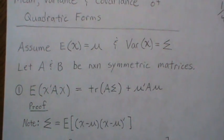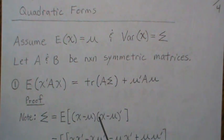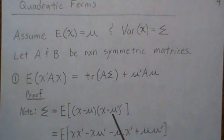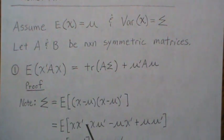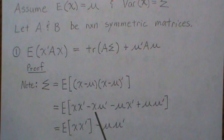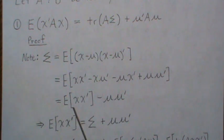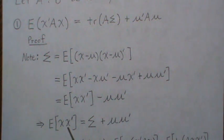For the proof we give a note first. The variance-covariance matrix is the expected value of this vector product. If we multiply through and take the expectation, the mu minus mu prime and mu mu prime terms partially cancel, leaving us with sigma. Rearranging gives us the expected value of xx' equals sigma plus mu mu prime.